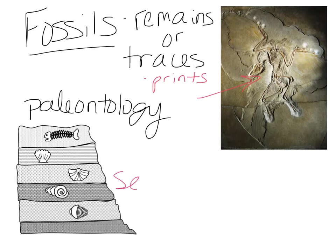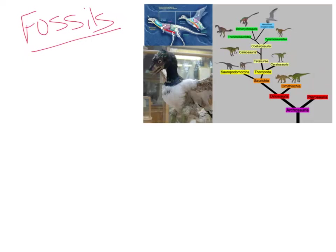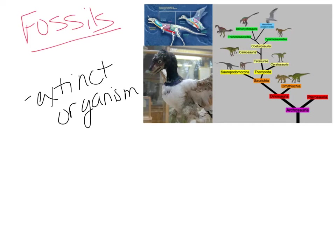The sedimentary rock layers help determine the age of the fossil. The further down in the layers that you find the fossil, the older it's going to be. More recent fossils would be near the top of the rock layer. Studying fossils allows us to study extinct organisms. That's one of the ways scientists were able to discover a link between birds and dinosaurs — by studying the structure and fossils of the two.